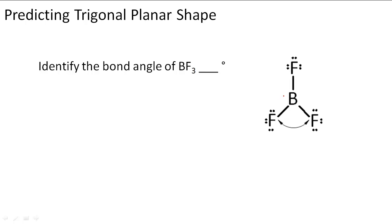So we know that we're actually looking at a trigonal planar shape. So we want to make sure that we're checking to see that we have that kind of shape first, and then we can figure out the bond angle.